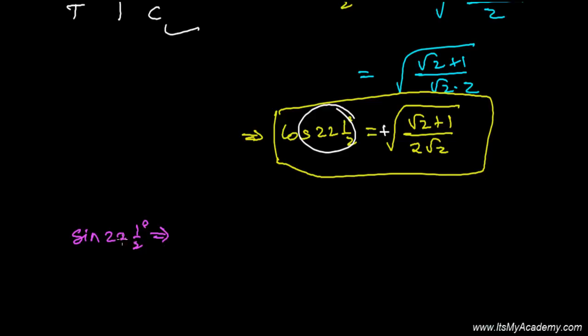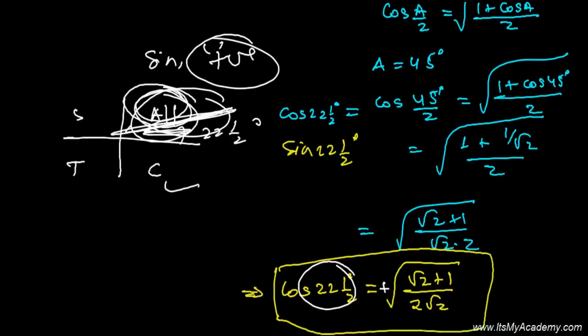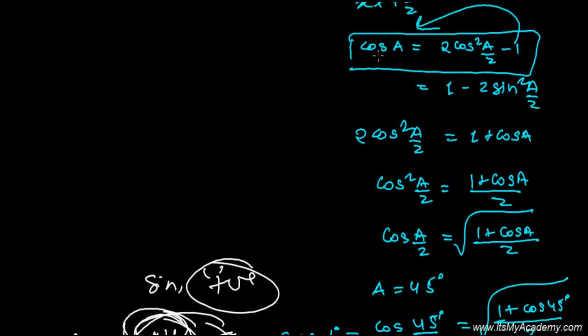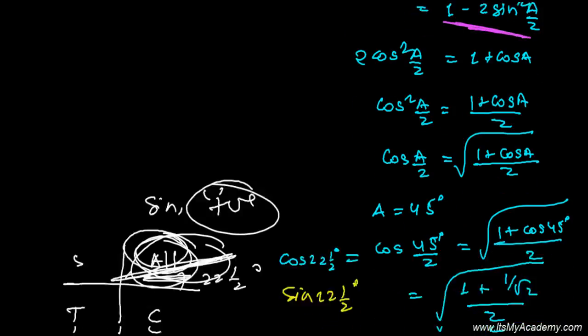So to find the value of sine 22.5 degrees, exactly the same process we need to follow that we followed here. We need to break cos A into the half-angle formula. When it was in cosine format, we found cosine 22.5 degrees. When it is in sine format, we'll find the sine 22.5 degree formula.